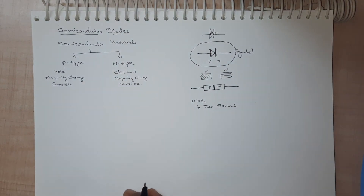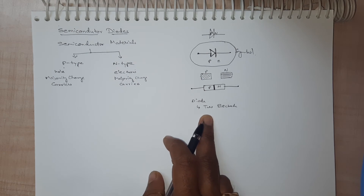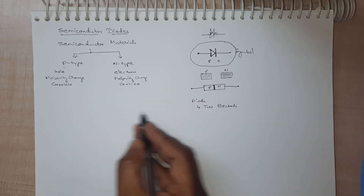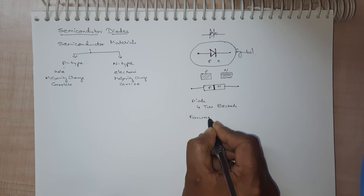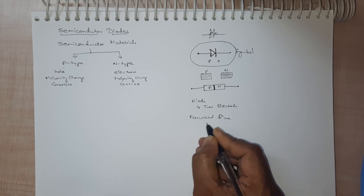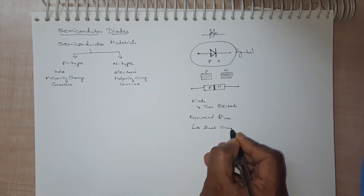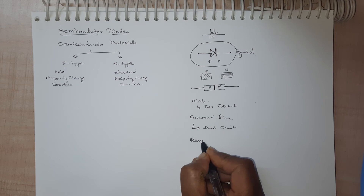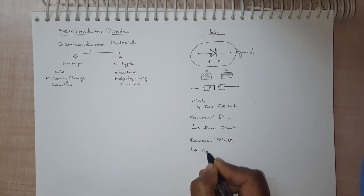Now let's go into more detail. This PN junction diode has a very peculiar operation: it will act as a short circuit in forward bias, and it will act as an open circuit in reverse bias.